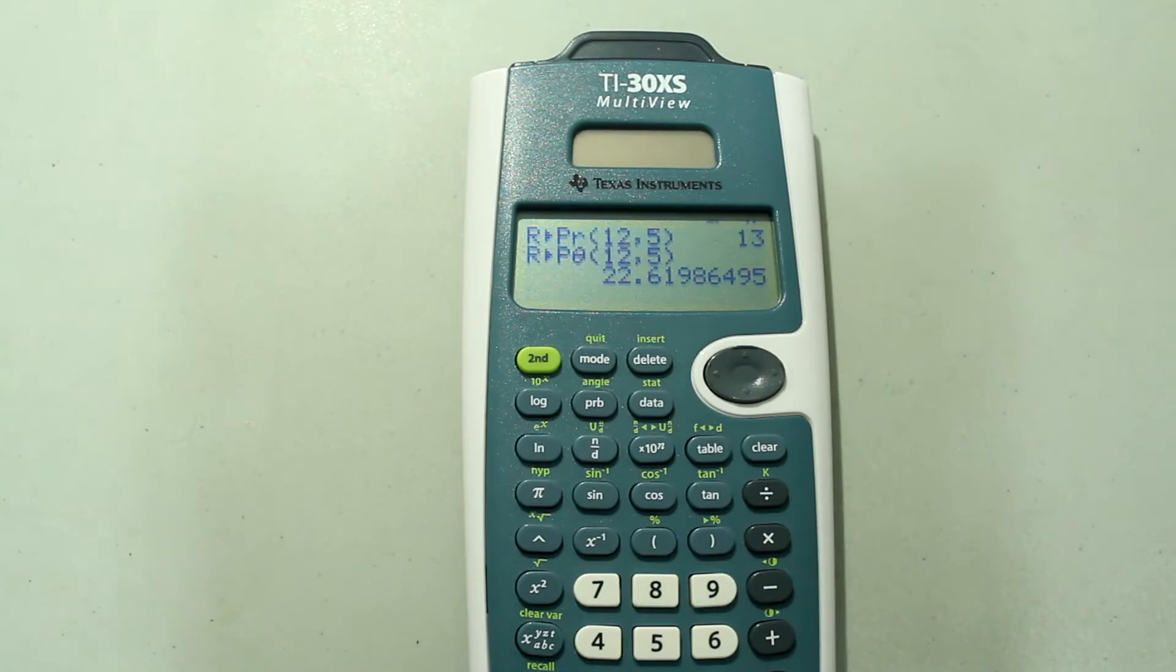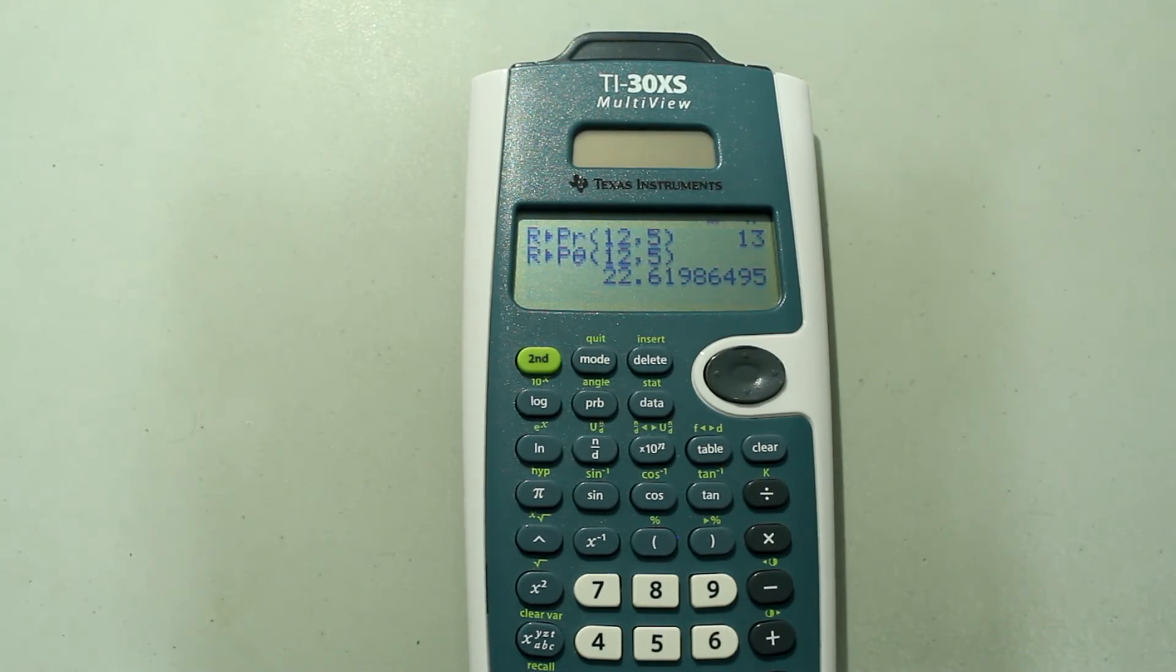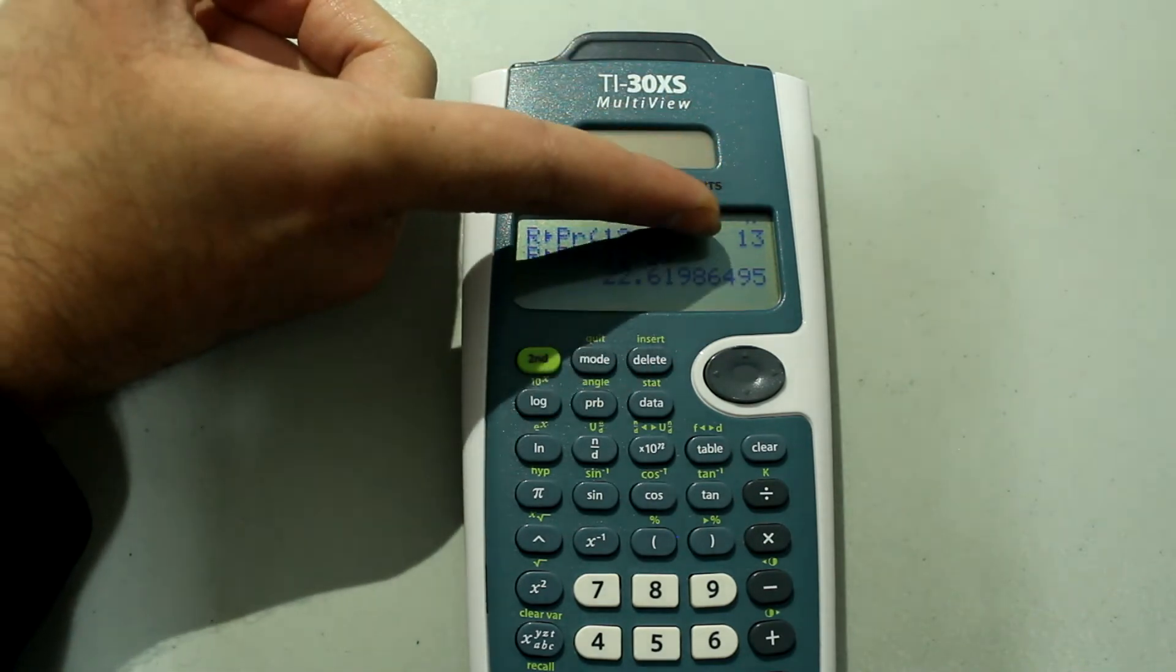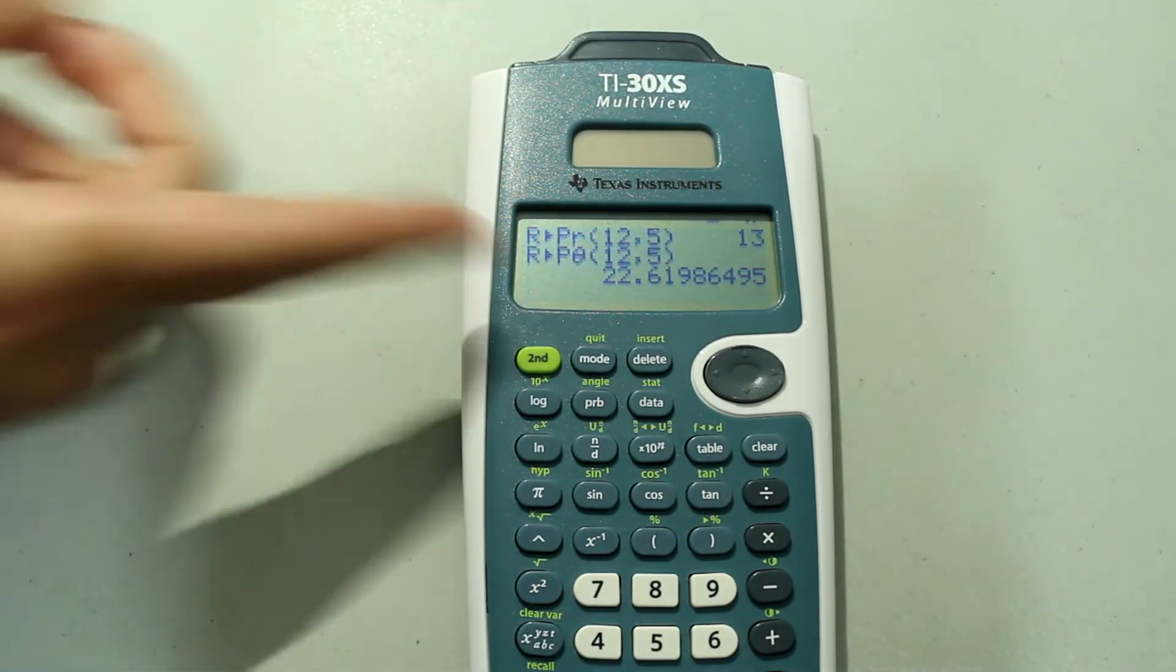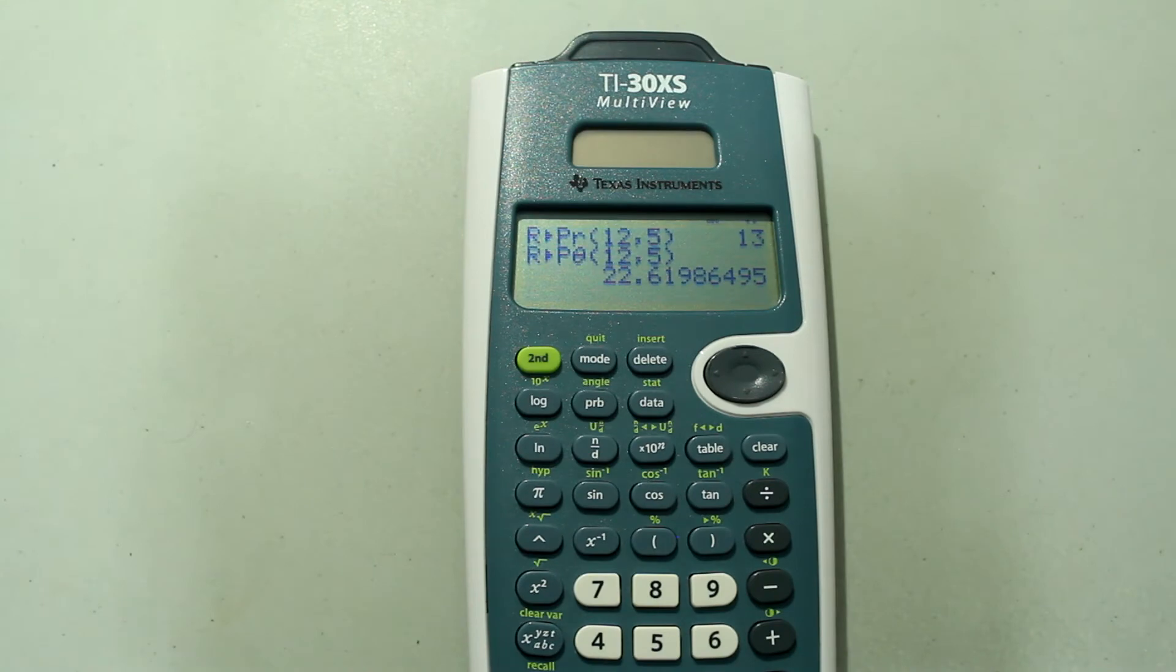So I get that the angle is roughly 22.62 degrees, which is what we already know, the angle for this polar form. So the radius value is 13, and the theta value is 22.62 degrees.